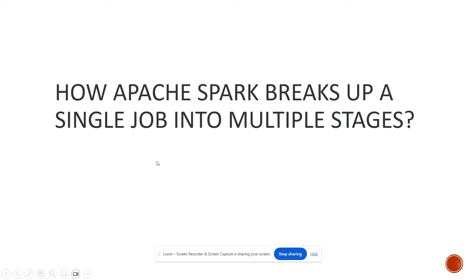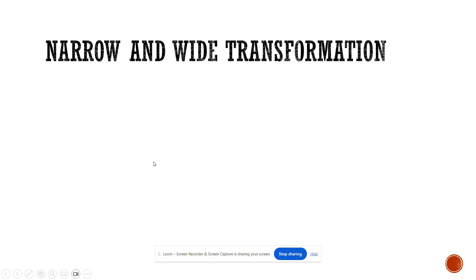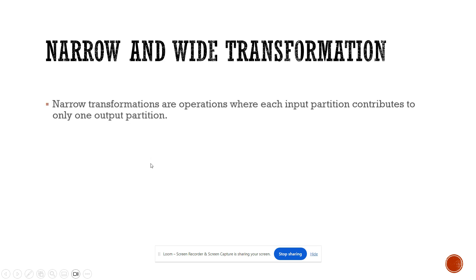In the last video we discussed the key concepts of Apache Spark, including what is a driver, executor nodes, and how a job, stage, and task is created. In today's lecture we will deep dive more into how a job is broken up into multiple stages. So how does Apache Spark break up a single job into multiple stages? Before that, we'll start with what is narrow and wide transformation.